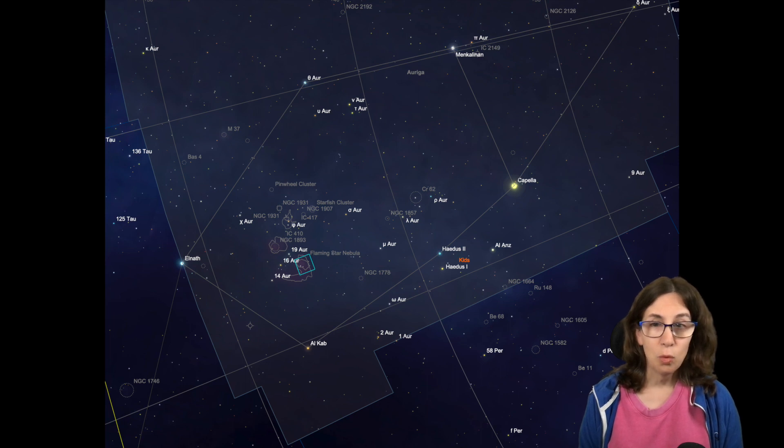That makes it a great winter target for those of us in the Northern Hemisphere. At a declination of 34 degrees north, it passes very nearly directly overhead for a good chunk of the Northern Hemisphere population. It's a large, L-shaped nebula.